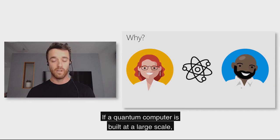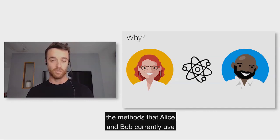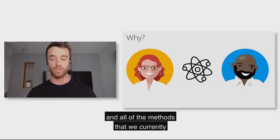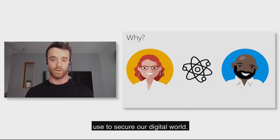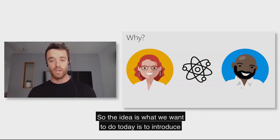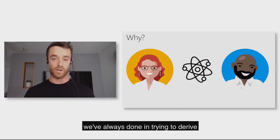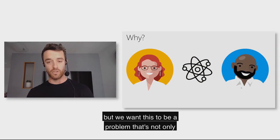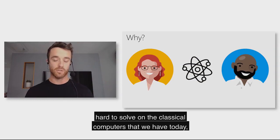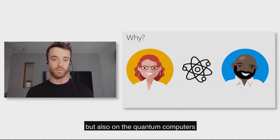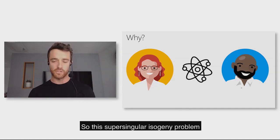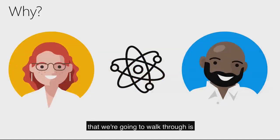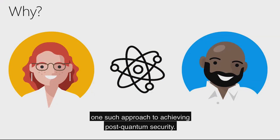If a quantum computer is built at a large scale, it will break all of the methods that Alice and Bob currently use to secure our digital world. So the idea is to introduce a mechanism that does the same thing — deriving a shared secret value — but based on a problem that's hard to solve not only on today's classical computers, but also on the quantum computers we're anticipating in the future. The supersingular isogeny Diffie-Hellman is one such approach to achieving post-quantum security.